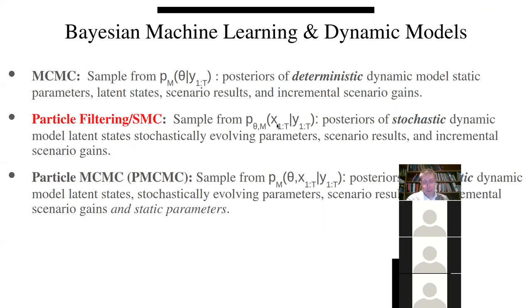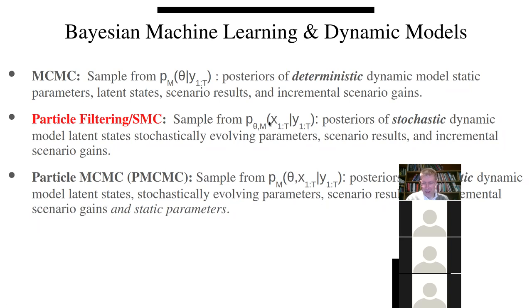The idea here with particle filtering is that we actually have a distribution of possibilities of what the underlying state of the system is. X is like a vector at any one time of the current state of the system — the subscript indicates time one, time two, or time three. So we're trying to estimate what that distribution of what is the case in the world is, in light of the data we see and in light of model structure capturing how the system evolves.